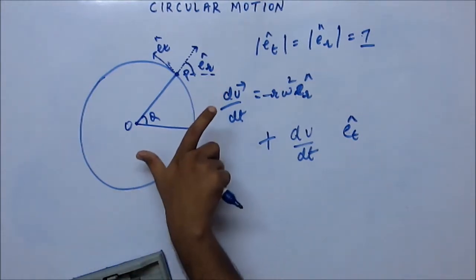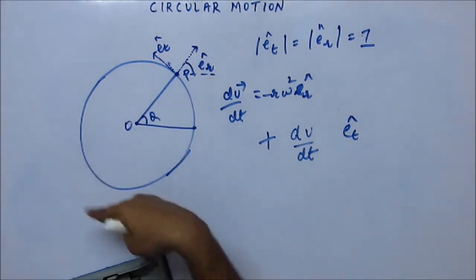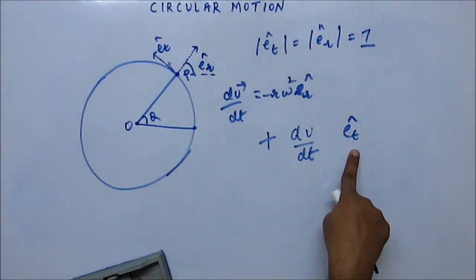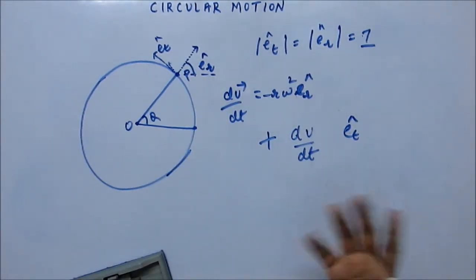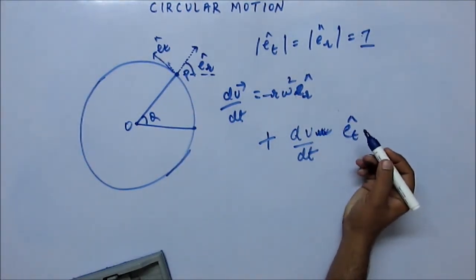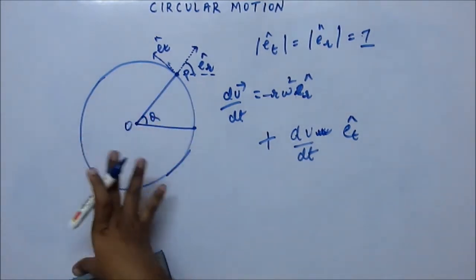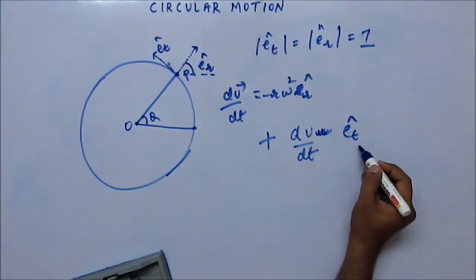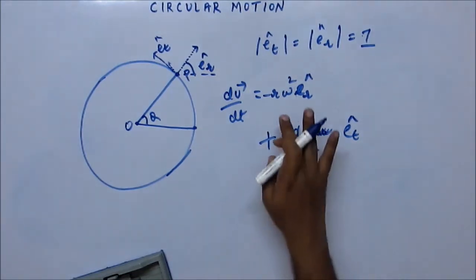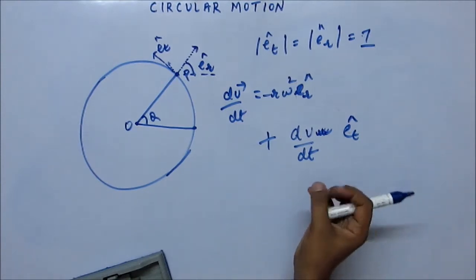E R cap is taken outwards, so minus E R cap would be inwards. That means for a particle moving in a circle, it will have two accelerations — one along the radius and one along the tangent. The one along the tangent is simply dV by dt, which increases the velocity of the particle. The force along the tangent has nothing to do with changing direction — it just increases the tangential velocity. The acceleration along the radius does not increase the velocity; it only changes the direction of the particle. Both accelerations are required in general.